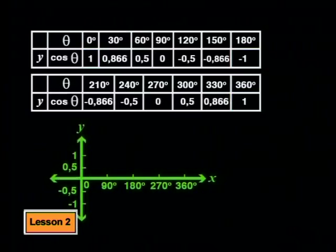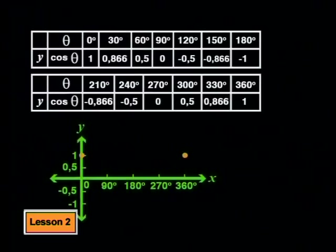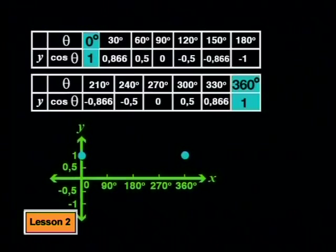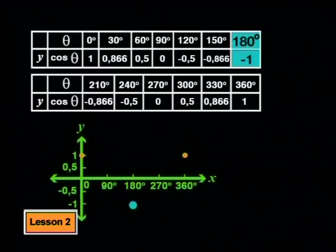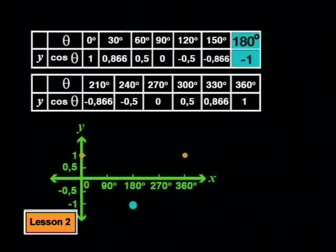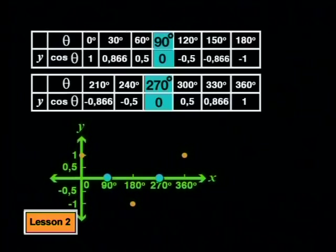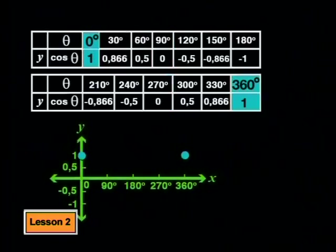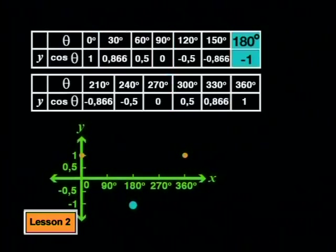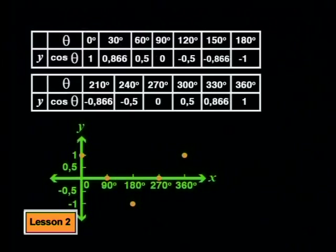From the table of values, we can see that cosine theta will reach a maximum of 1 at theta equal to 0 degrees and again at 360 degrees. Cosine theta has a minimum of negative 1 where theta is equal to 180 degrees. But when theta is 90 and theta is 270 degrees, cosine theta is 0. So far, we've plotted the maximum points, the minimum points and the x-intercepts. You'll see that we don't yet have enough points to see the shape of the graph.